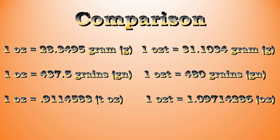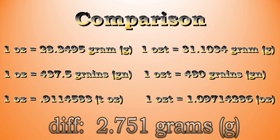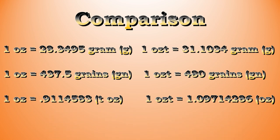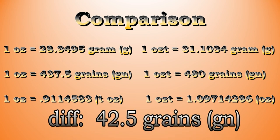Here is a side-by-side comparison to get a better feel for the differences between the ounce and the troy ounce. A regular ounce is equivalent to 28.349 grams, while a troy ounce is a little heavier with a gram equivalent of 31.1 — a difference of 2.751 grams. A regular ounce is the equivalent of 437.5 grains, and a troy ounce is a little heavier with a grain equivalent of 480, a difference of 42.5 grains.